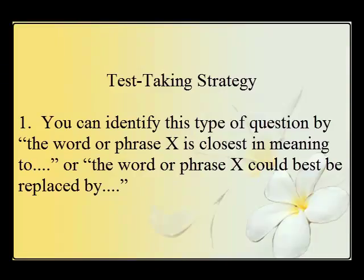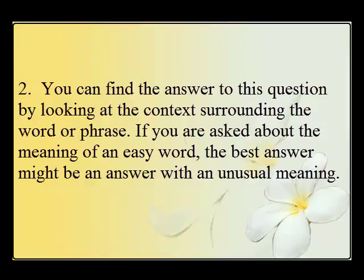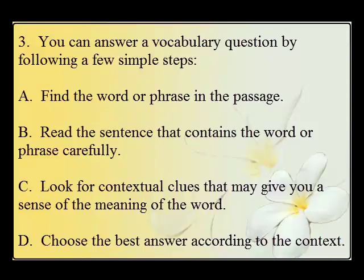Test taking strategy. Number one: you can identify this type of question by the word or phrase 'X is closest in meaning to,' or it might say 'the word or phrase X could best be replaced by.' Two: you can find the answer to this question by looking at the context surrounding the word or phrase. If you are asked about the meaning of an easy word, the best answer might be one with an unusual meaning. Three: you can answer a vocabulary question by following a few simple steps.